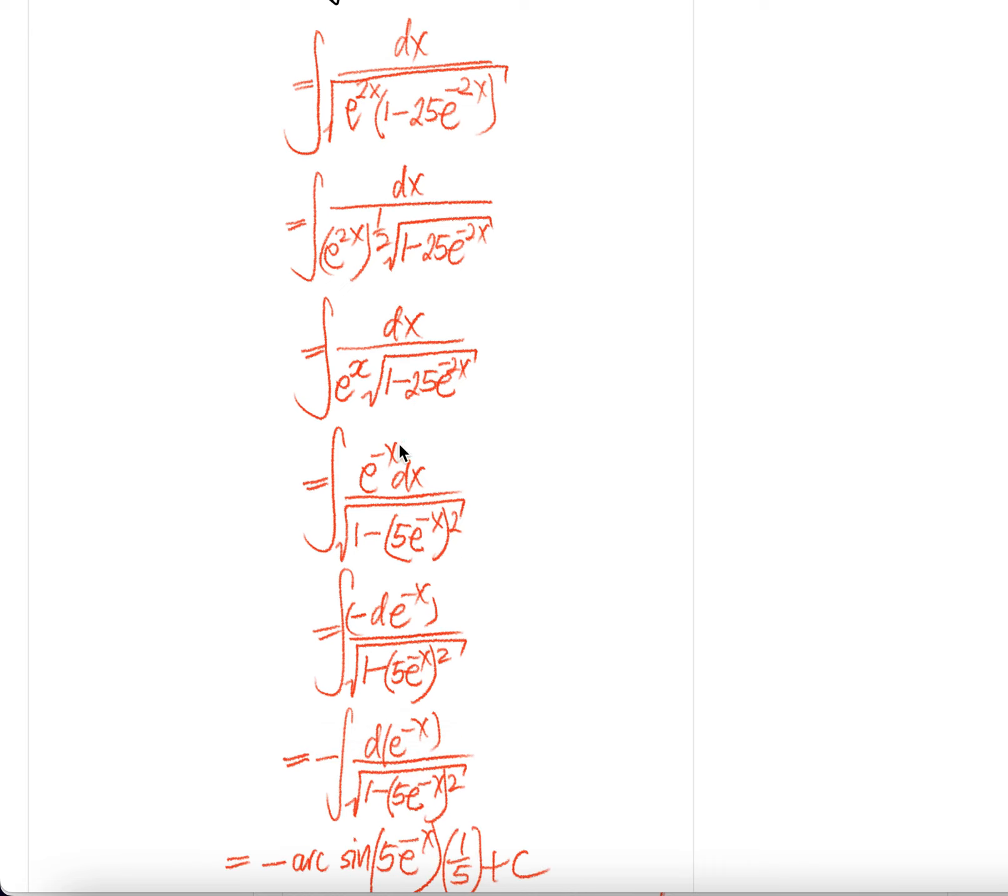1 over e to the power 2x is e to the power negative x dx, and then you can write this as a square. It'd be 5 times e to the power negative x square. 5 square is 25, e to the power negative x square will be e to the power of negative 2x.